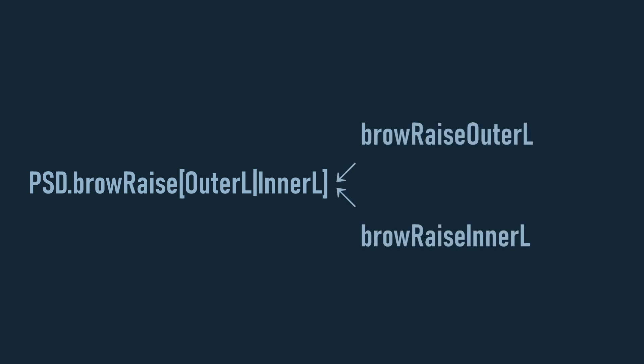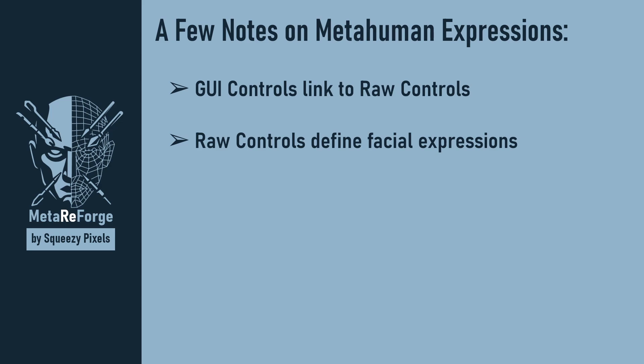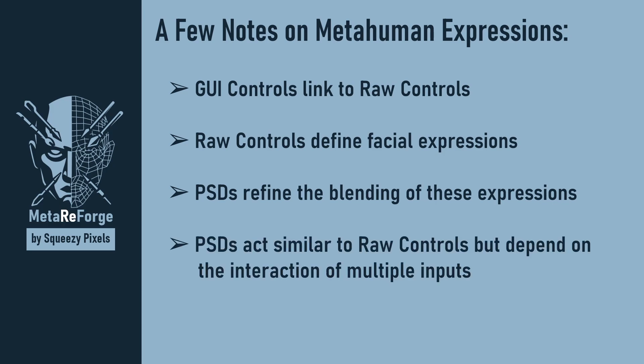In MatterForge, PSDs are named systematically. The name starts with the identifier 'PSD', followed by the common part of the linked raw controls, and in square brackets it lists the unique parts of each linked control. For example, one PSD represents the blending of the left and right Mouth Cheek Blow expressions; another combines the outer-left and inner-left brow rise expressions. To summarize: GUI controls link to raw controls which define facial expressions, and PSDs further refine the blending of these expressions, acting like raw controls but depending on the interaction of multiple inputs.